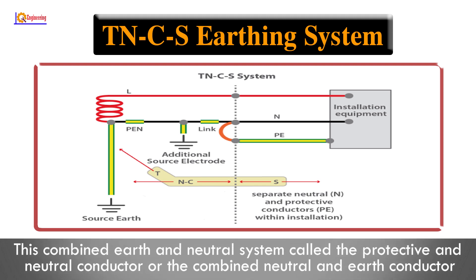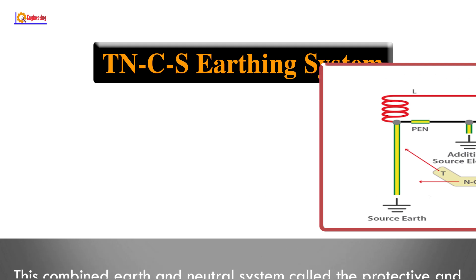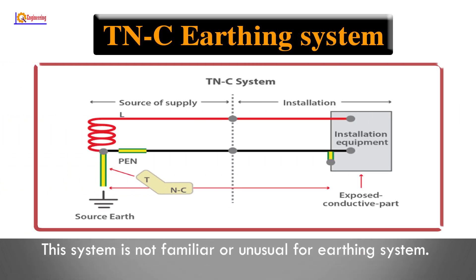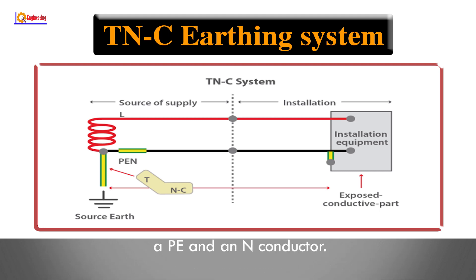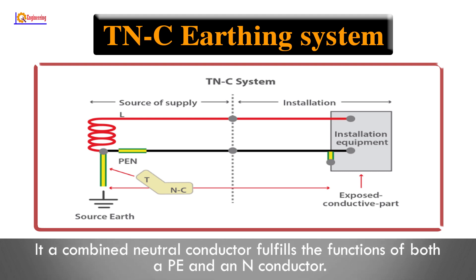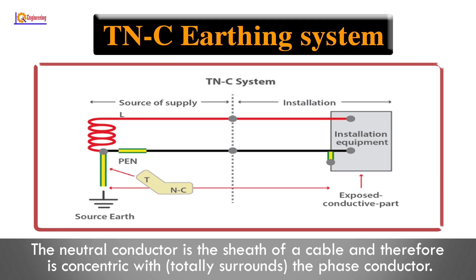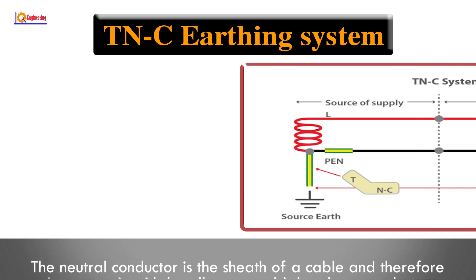This combined earth and neutral system is called the protective and neutral conductor, or the combined neutral and earth conductor. This system is unusual for an earthing arrangement — a combined neutral conductor fulfills the functions of both a PE and N conductor. The neutral conductor is the sheath of a cable and is therefore concentric, totally surrounding the phase conductor.